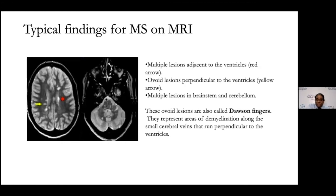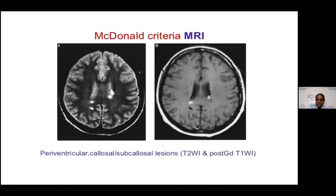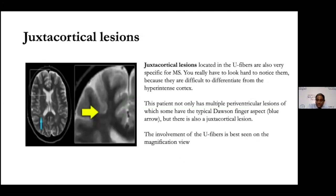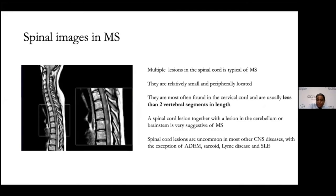MRI images demonstrate these periventricular lesions abutting the lateral wall of the ventricle, known as Dawson's fingers, as well as callosal and subcallosal lesions and juxtacortical lesions in the U-fiber region. Spinal cord lesions in MS are usually less than 2 vertebral segments in length. However, multiple short segment lesions can occasionally appear as a longer lesion, so it is important to remember that what looks like a long lesion may actually be a collection of short segment lesions.